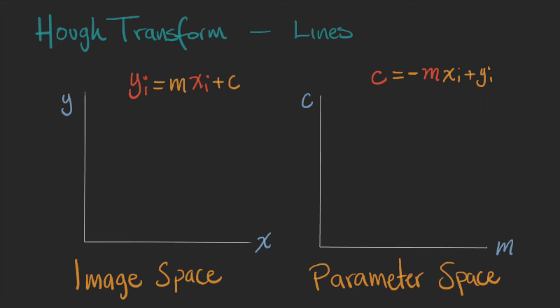This transformation is convenient because one point in one space will represent a line in the other and vice versa. For example,